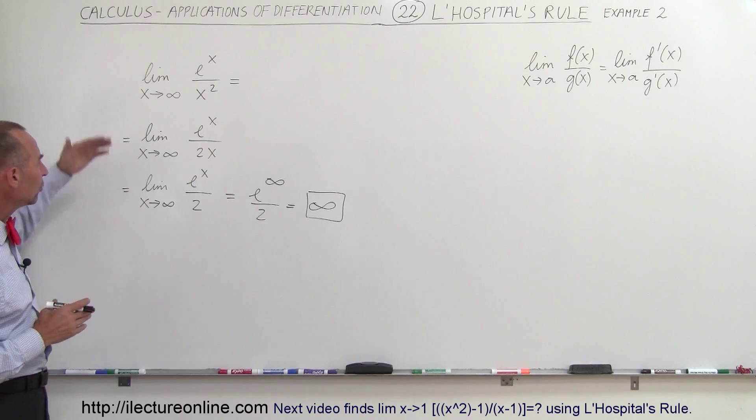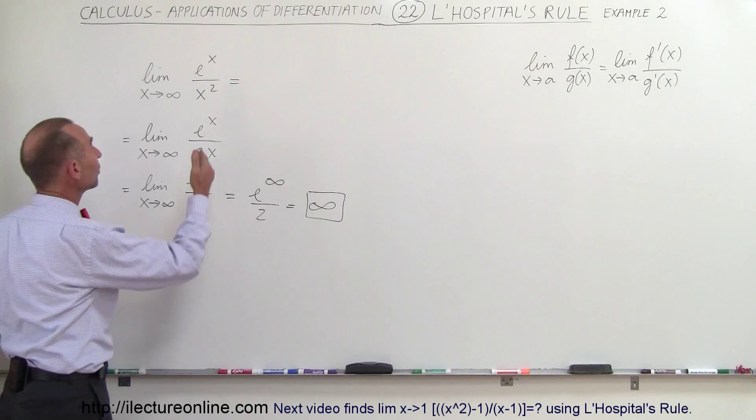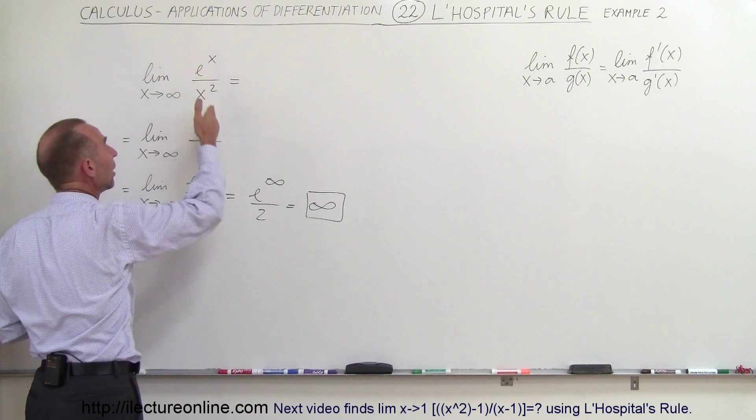Now you say to yourself, well why can I do this twice? You didn't show me that when you showed me the rule, but what we can say is that once we take the derivative of the numerator and the denominator, we can again call this f of x and call this g of x.